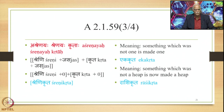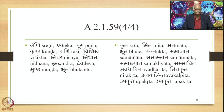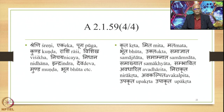These are some of the words in the Shrenyadi group: Shreni, Eka, Puga, Kund, Rashi, Vishikha, Nichaya, Nidhana, Indra, Dev, Munda, and Bhuta. In the Kritaadi Gana: Krita, Mita, Mata, Bhuta, Ukta, Samadhyata, Samamnata, Samakhyata, Samabhavita, Avadharita, Nirakrita, Avakalpita, Upakrita. When words from these groups are semantically related, they get compounded. One can imagine how many compound forms they would theoretically generate, though speakers of Sanskrit may not have thought about generating all the forms.